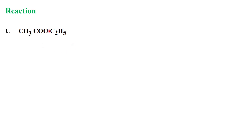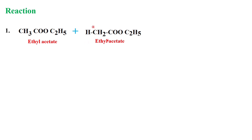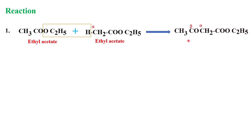Now we will see the reaction for Claisen condensation. For ester plus ester, we get a beta-ketoester. The ester taken is ethyl acetate, which combines with another molecule of ethyl acetate. It must have a minimum of two alpha hydrogen atoms — here it has three. On condensation, the ethoxide group removes a hydrogen, the remaining group adds to the carbonyl carbon, and the product is ethyl acetoacetate, a beta-ketoester.